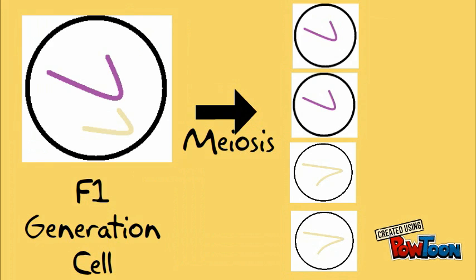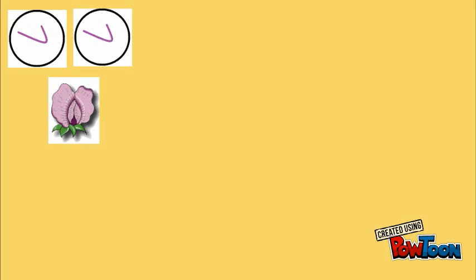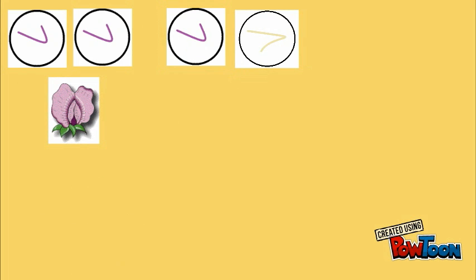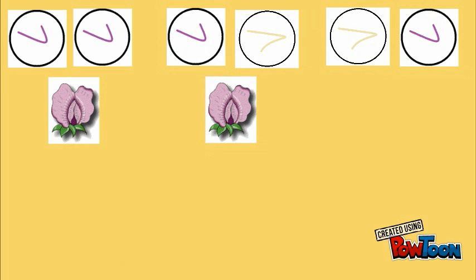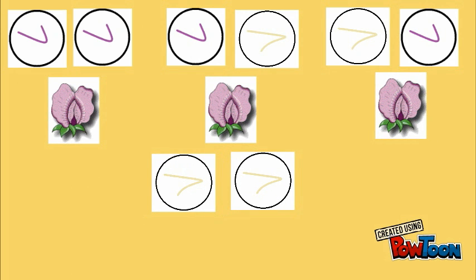One purple and another purple. One white and another white. Therefore, when the offspring of this generation were created, there were various combinations. Two purple flowers created a purple flower. One purple and one white factor combined to create a purple flower. Or, one white and one purple could combine to create a purple flower.